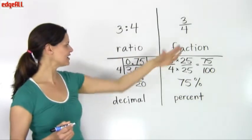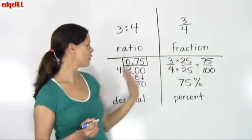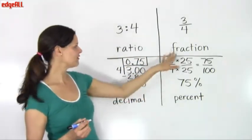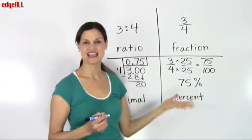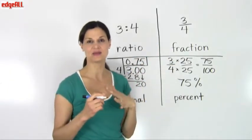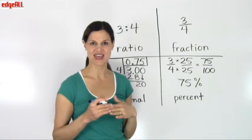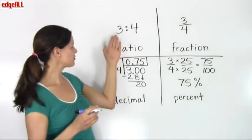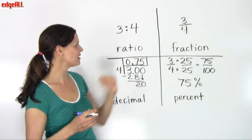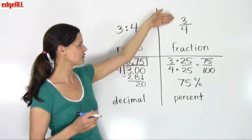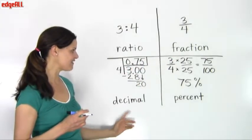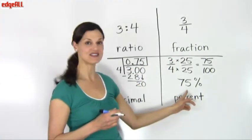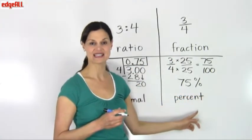So you can see here that we have 4 different forms of the same fraction. The ratio, fraction, decimal, and percent is the same value, the same numbers, but we're expressing them in different forms. 3 to 4 as a ratio, 3 fourths or 3 over 4 as a fraction, 0.75 as a decimal, and 75% as a percentage.